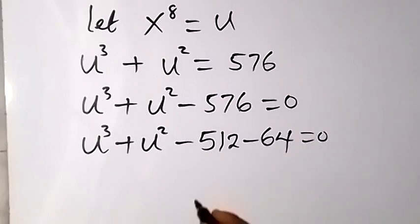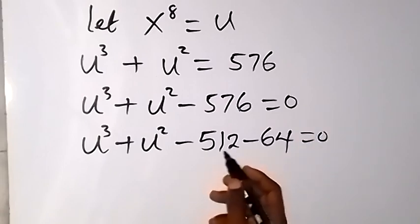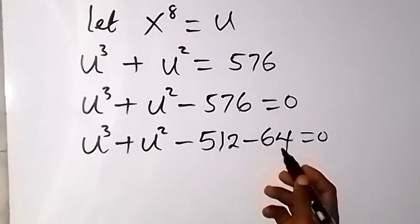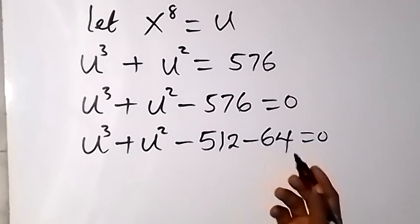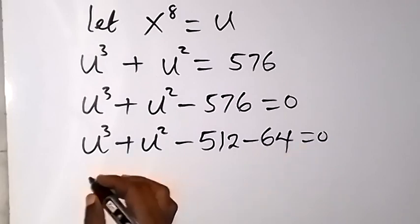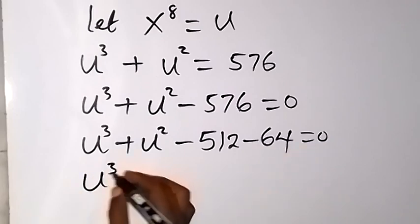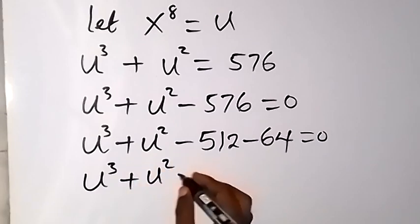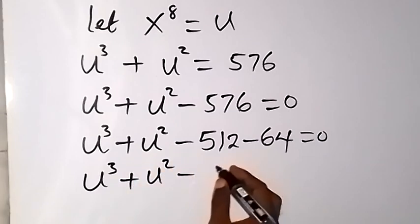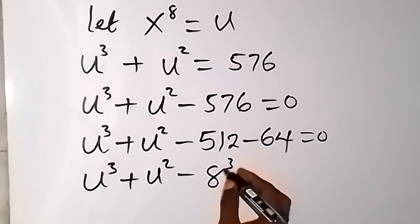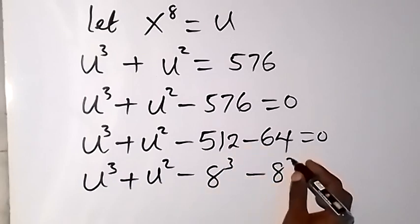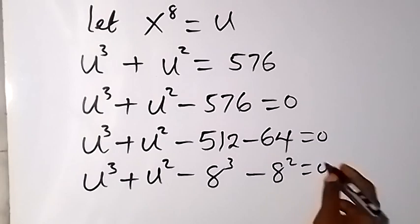Now here we can express 512 as a number raised to power 3, and also 64 as a number squared. So we now have u raised to power 3 plus u squared, then minus 8 raised to power 3, then minus 8 squared, equals 0.